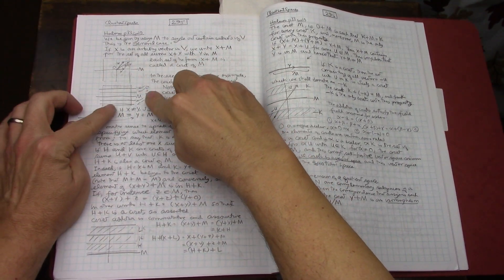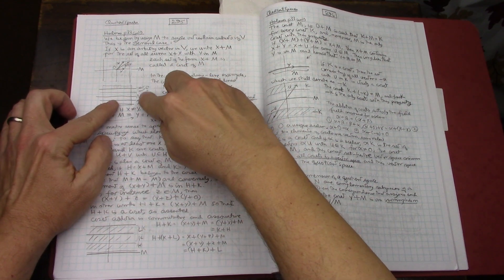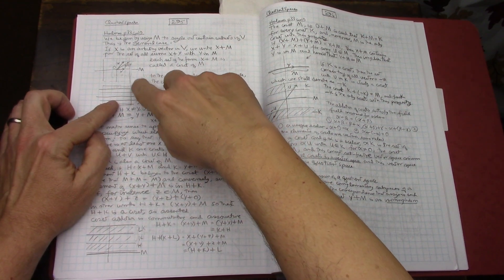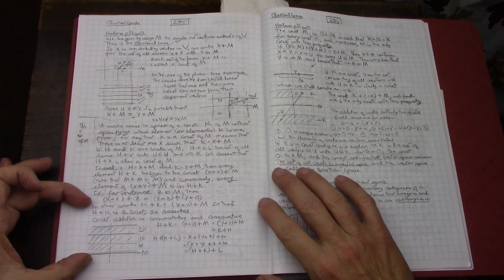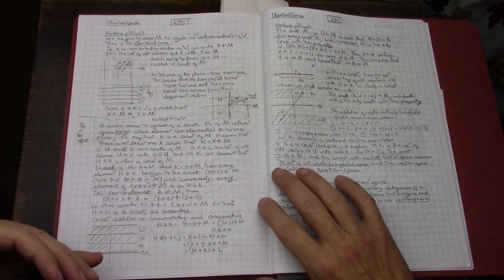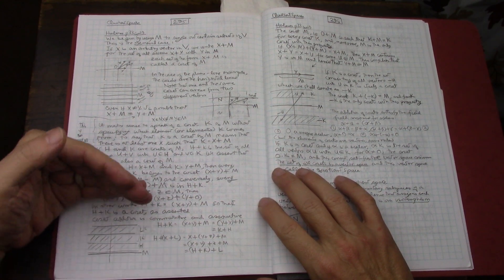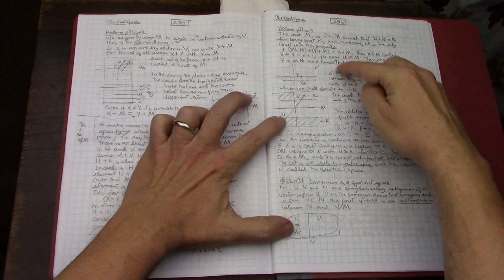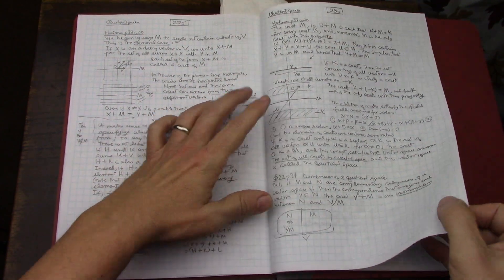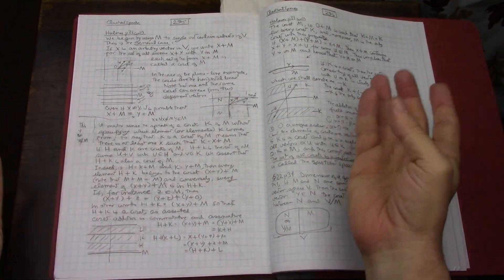So of course this explains that a coset is not the set. The space of all cosets is not a vector space because it doesn't have the zero vector. And of course Halmos also explains in detail the algebra of playing with various cosets and then sets up all kinds of examples.